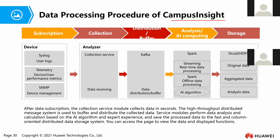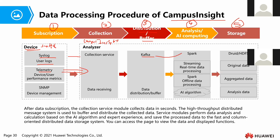The data processing procedure in Campus Inside follows five steps: subscription, collection, distribution and buffer, analysis or AI computing, and storage. First, network devices such as switches subscribe with Campus Inside. Then Campus Inside collects data — syslog data, user log data — using telemetry. After collection, Campus Inside distributes the data using Kafka, which is a service used for distribution of all collected data across different analysis services.